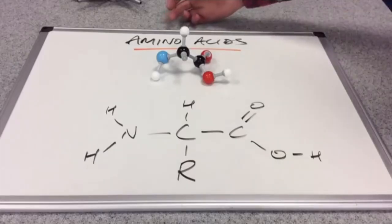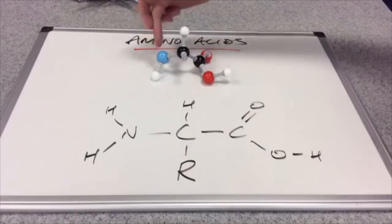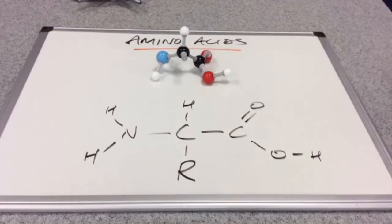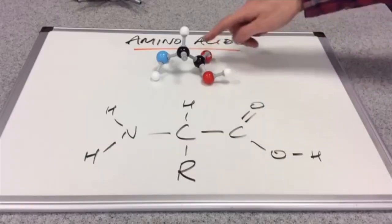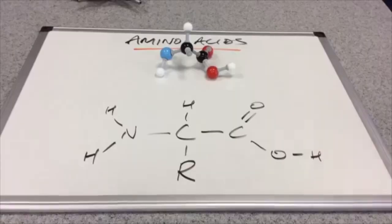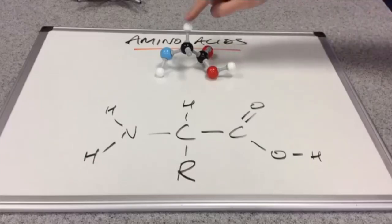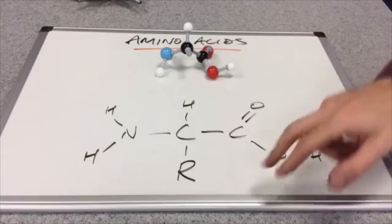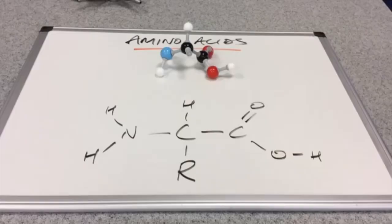So why are they called amino acids? Well we've got an amino group, so there's the NH2 group here, and we've also got an acid group, so there's the COOH group there. As well as these two functional groups, the amino group and the acid group, we've also got a hydrogen bonded to this carbon, and we've got a variable R group, so that's why I haven't put anything on there.